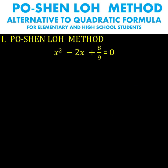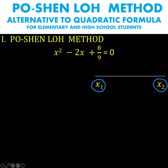With that as our preparation, let's demonstrate the Po Shen Lo method using an example. Let's say we are going to solve for the roots of x squared minus 2x plus 8 over 9 equals 0. The first thing we do is call the two roots x sub 1 and x sub 2, where x sub 1 is the left side root and x sub 2 is the root on the right side. Then let's find the midpoint of this line segment separating x sub 1 and x sub 2, by adding x sub 1 plus x sub 2 and dividing by 2.